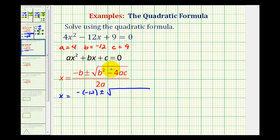of (-12)² - 4(4)(9), and we have a denominator of 2(4).